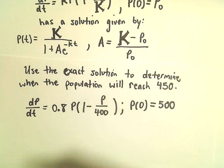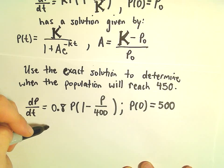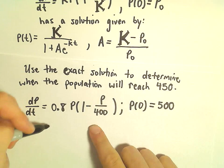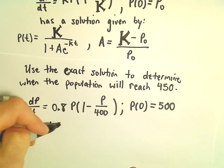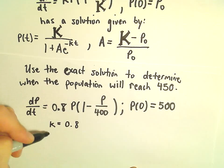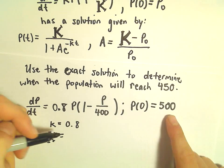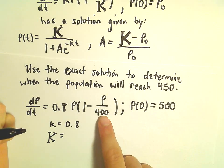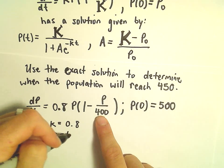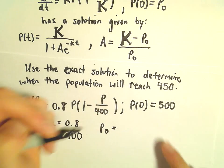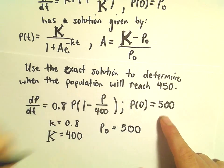Really, a lot of this is just more algebraic in nature than anything. So in this case, our little k is going to equal 0.8. Our capital K is going to be the carrying capacity, which is 400. We need our initial population, P sub 0, and that's going to be 500.